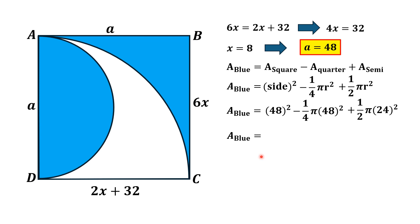So simplifying, blue shaded area will be equal to—48 square is equal to 2304. Similarly in this term, 48 square is 2304 and 24 square is equal to 576. So simplifying, we will get blue area is equal to 2304. This term will simplify to pi times 576 and this will simplify to pi times 288.